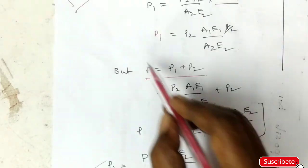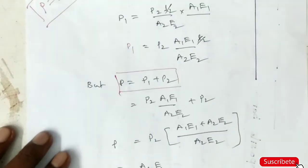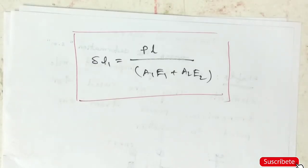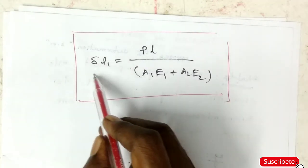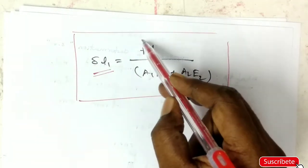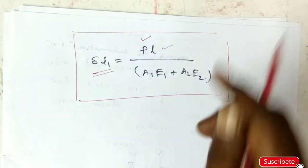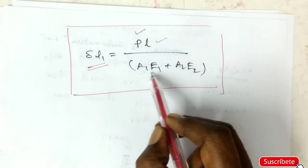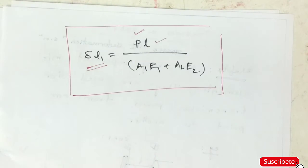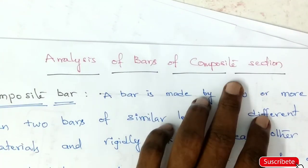P equals P1 plus P2. Substitute the values. Finally the extension, delta L equals P total load into overall length L divided by A1 E1 plus A2 E2. So this is the analysis of bars of composite section.